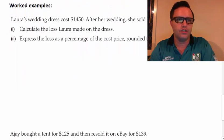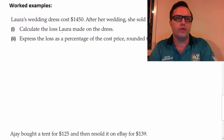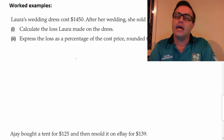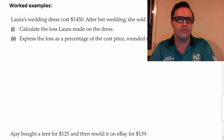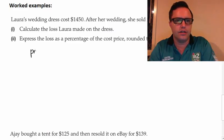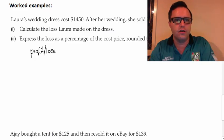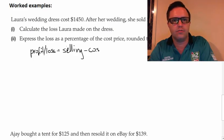A couple of worked examples. So Laura's wedding dress costs $1,450. After her wedding, she sold it on for $900. Calculate the loss Laura made on the dress and then express the loss as a percentage of the cost price rounded to the nearest percent. So first I'm going to do is I'm going to write the little formula. So we got the profit or loss is equal to the selling price minus the cost price. And so that was $900 minus $1,450, which is equal to negative $550.